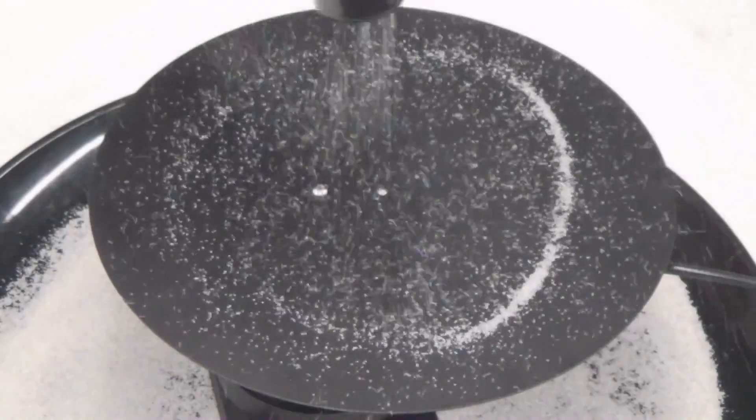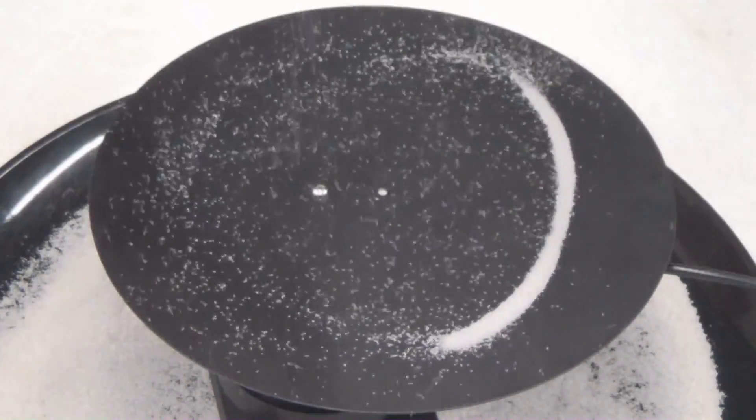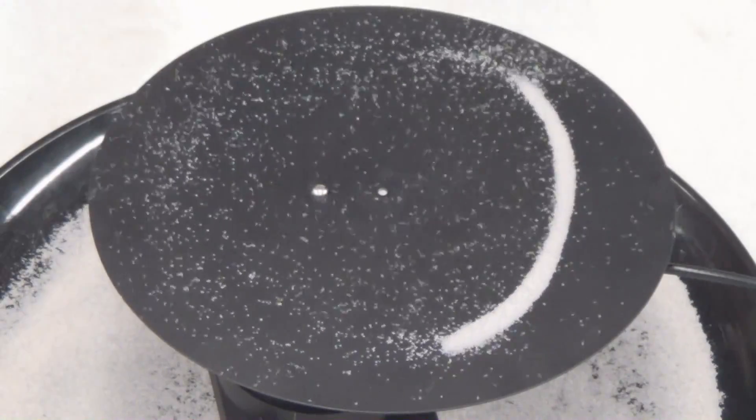Next, we'll see the nodes on an offset circle plate. This is the same circular plate, but now it is offset from the center of the circle.